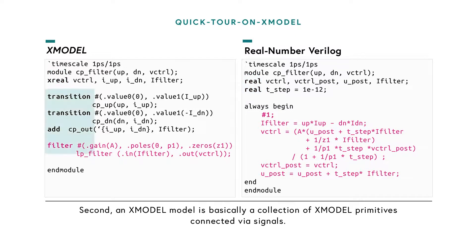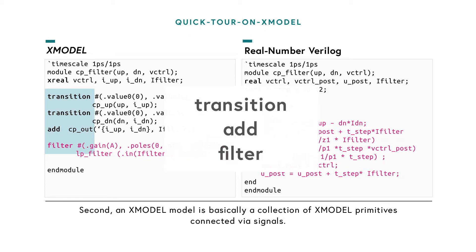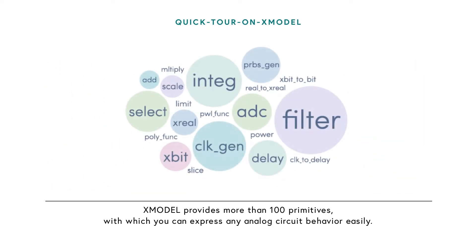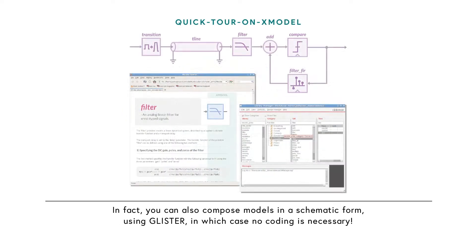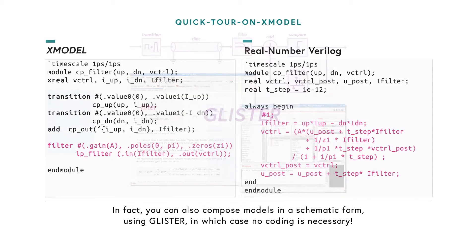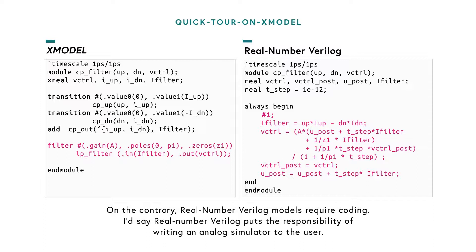Second, an X-Model model is basically a collection of X-Model primitives connected through signals. X-Model provides more than 100 primitives with which you can express any analog circuit behavior easily. In fact, you can also compose models in a schematic form using Glister, in which case no coding is necessary. On the contrary, Real Number Verilog models require coding.